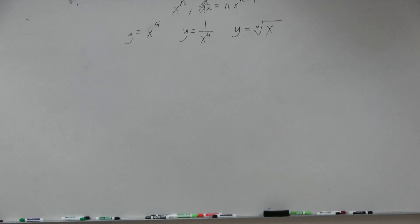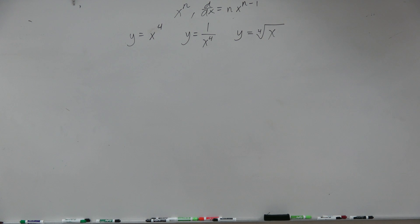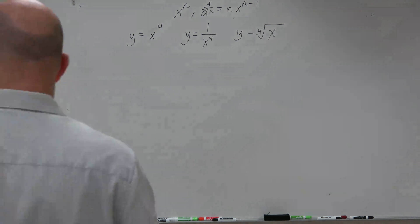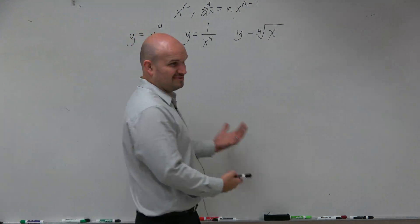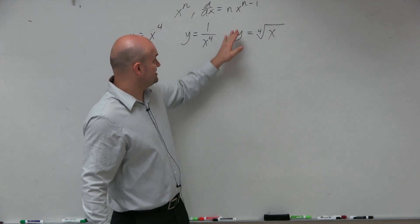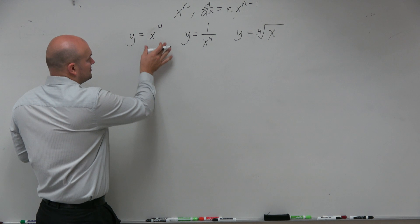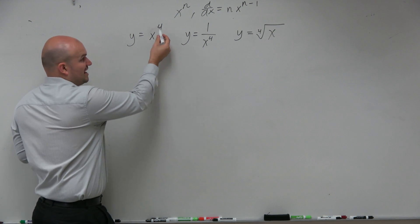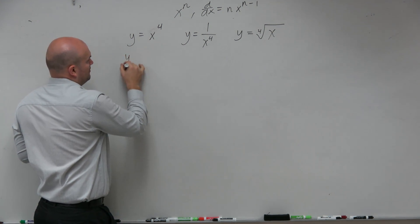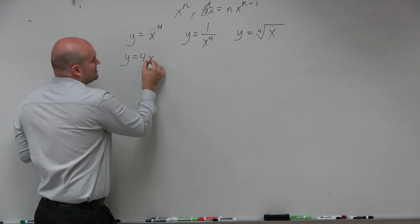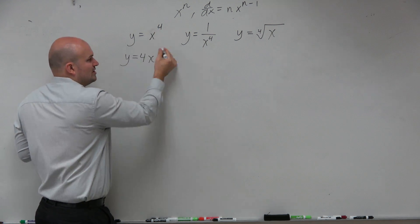And basically the easy way that I kind of remember to do it is whatever the power is, you bring it down and then you shake it down, which is basically subtracting the 1. So, in this case, you guys can see here that I have 4 as my power, so it's going to be y equals 4 times x, and then I'm just going to subtract 1, which will give me 3.